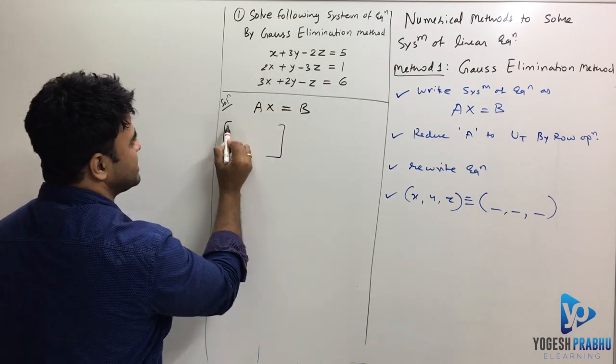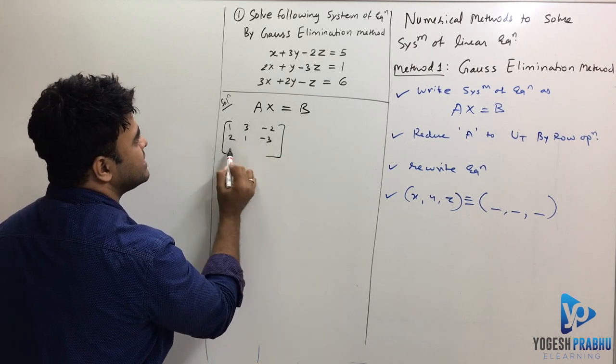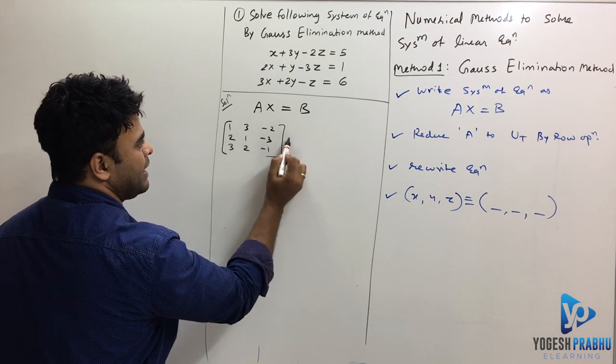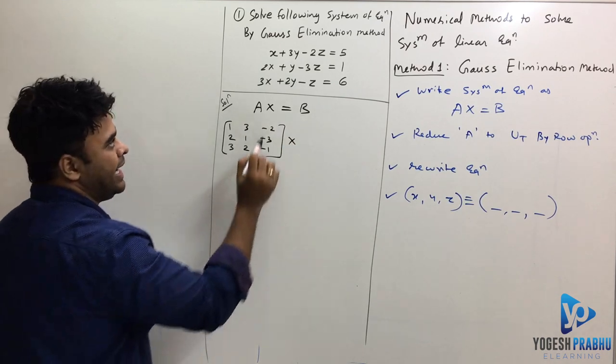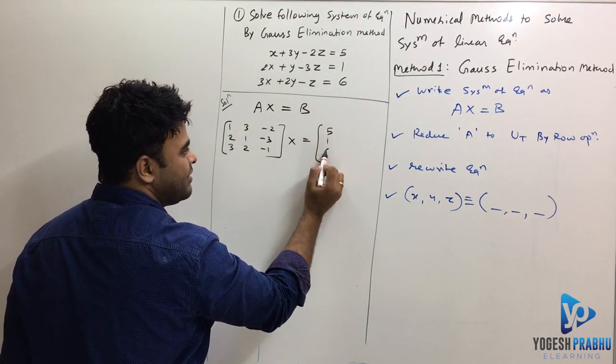So I will write down all the coefficients. This is 1, 3 and minus 2. Then 2, 1, minus 3 and 3, 2, minus 1. Then this is x. X is basically variable matrix and b is the constant matrix on the right side: 5, 1, 6.